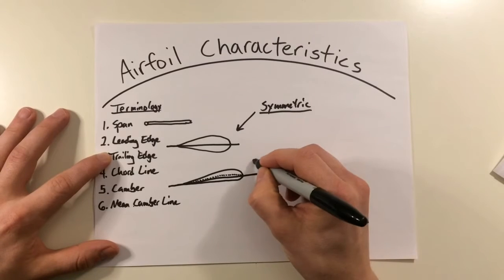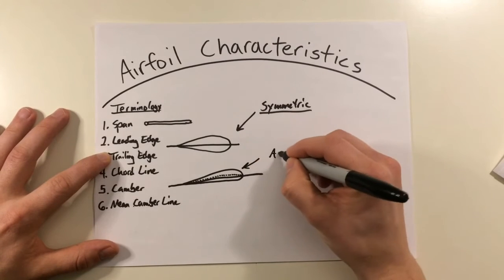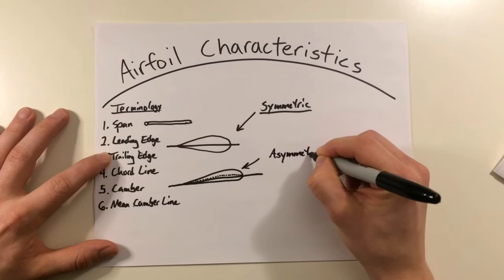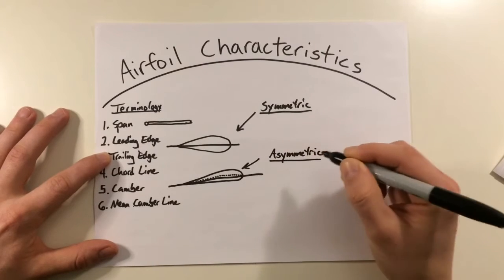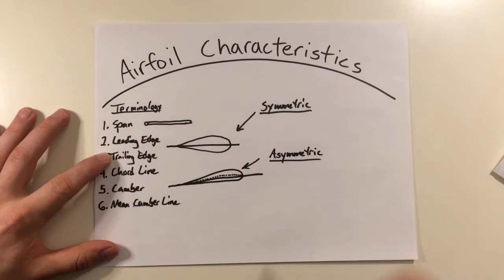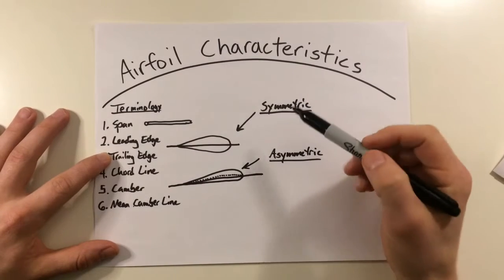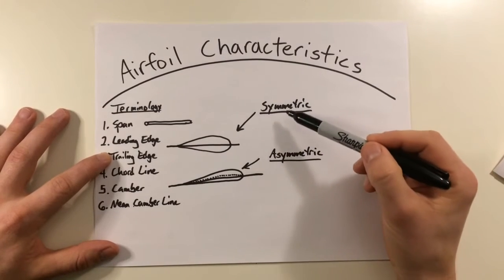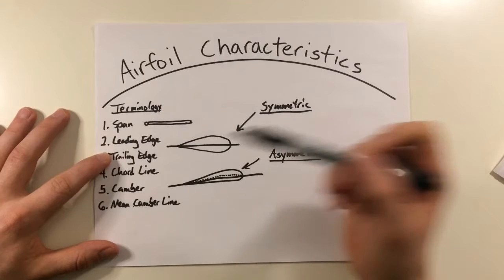But from here, it's important to note that we had two different types of airfoils here. We have the asymmetric and the symmetric. The symmetrical blade, the camber is the same on top as it is on the bottom and it matches the chord line.